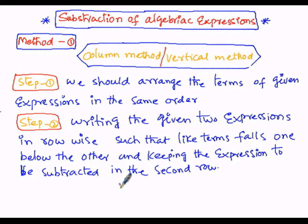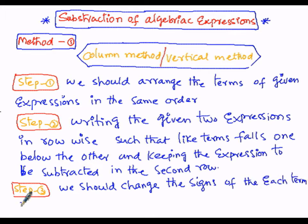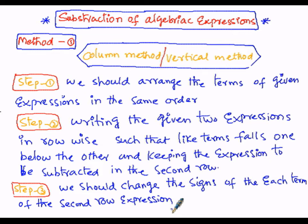As step number three, we must change the signs of each term of the second expression — the one to be subtracted — from positive to negative and from negative to positive. So we change the signs of each term of the second row expression accordingly.